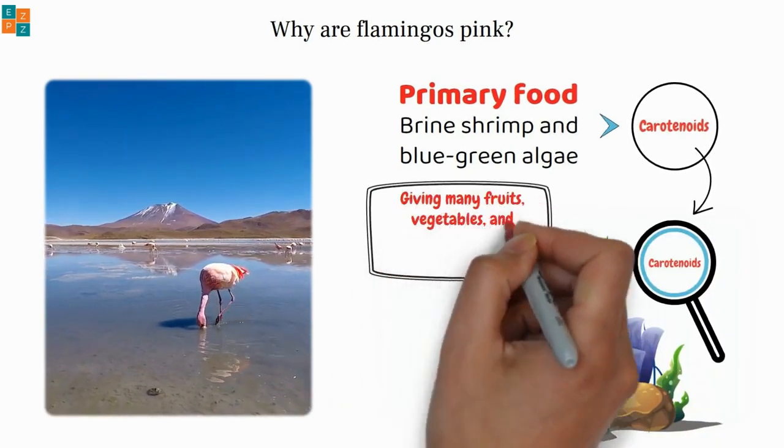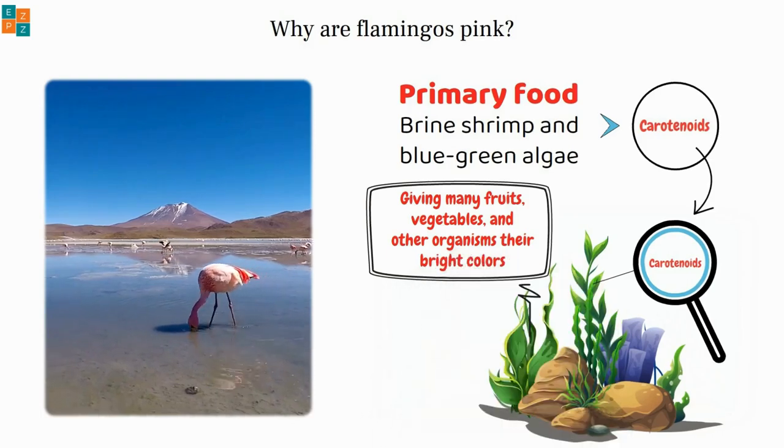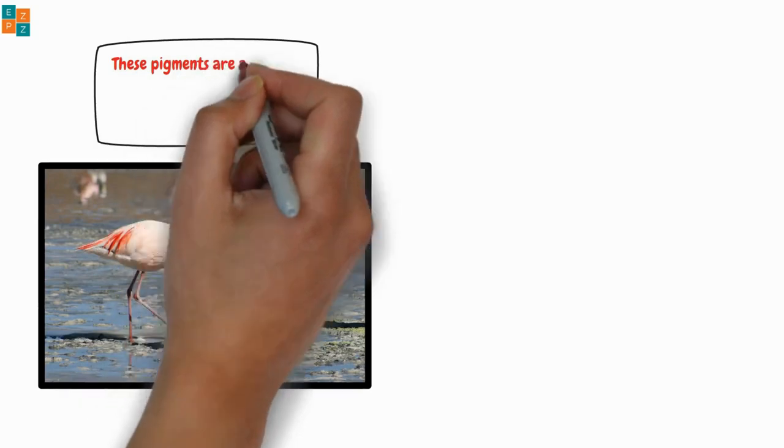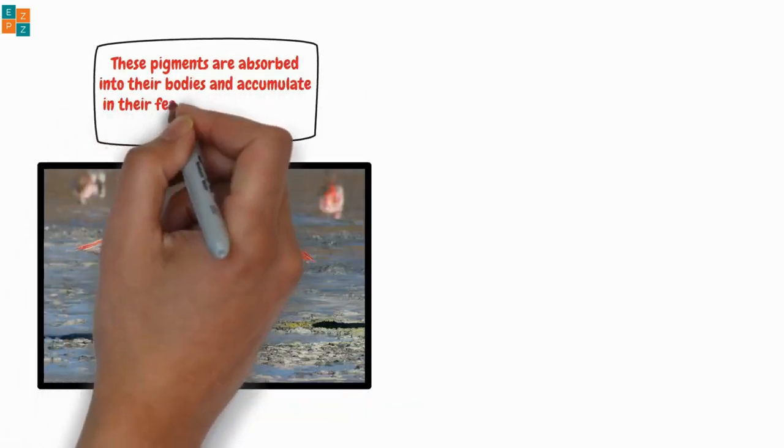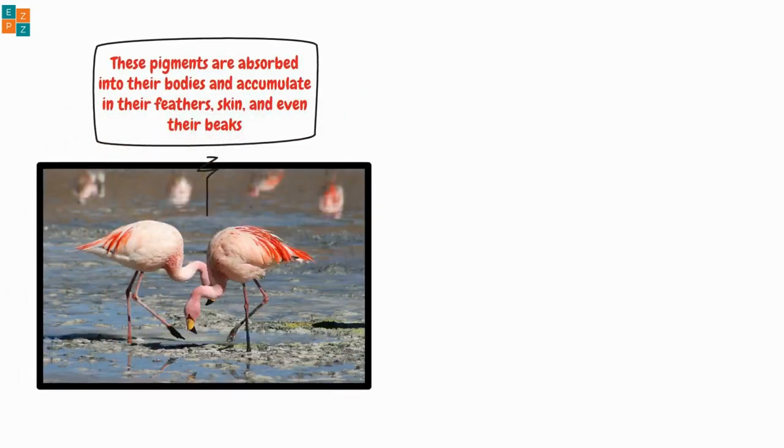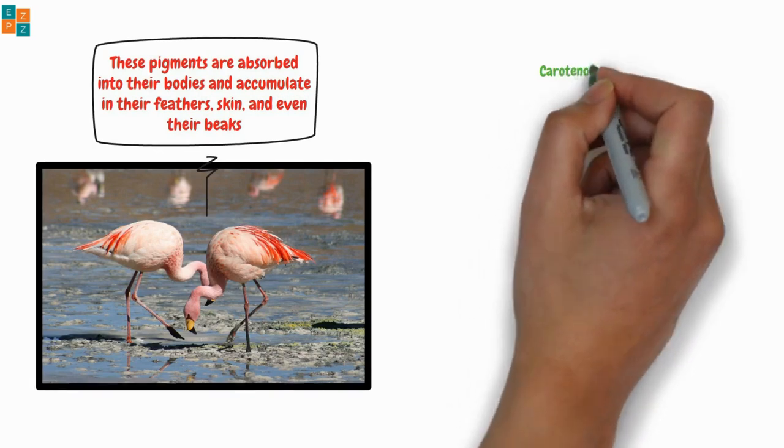Carotenoids are responsible for giving many fruits, vegetables, and other organisms their bright colors. When flamingos eat foods rich in carotenoids, these pigments are absorbed into their bodies and accumulate in their feathers, skin, and even their beaks.